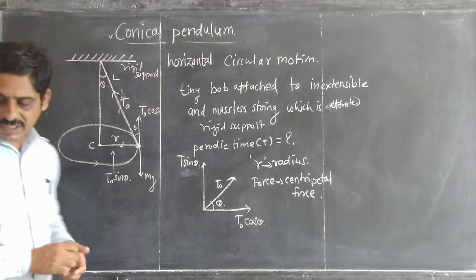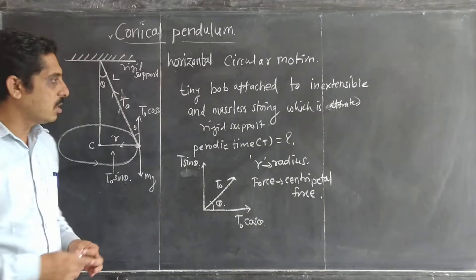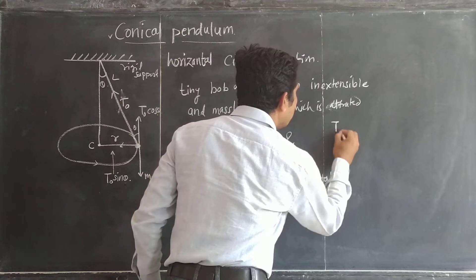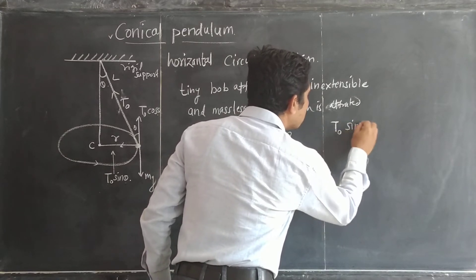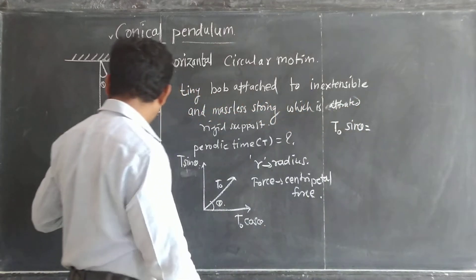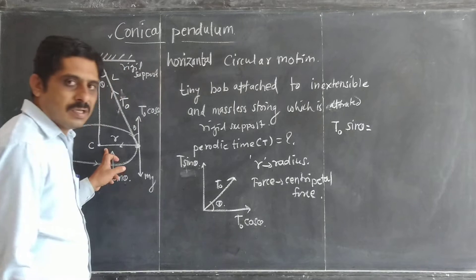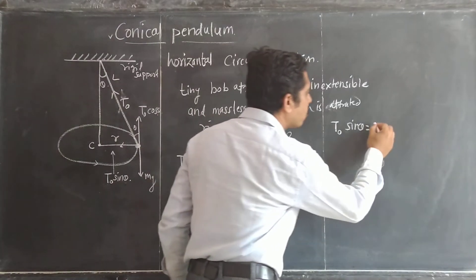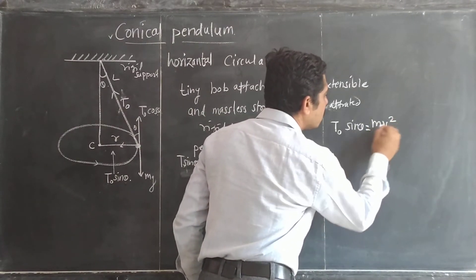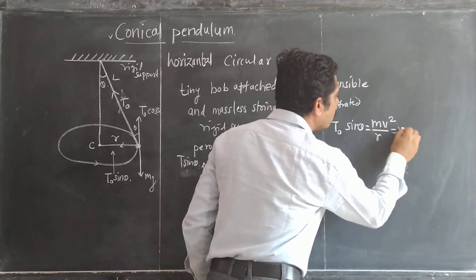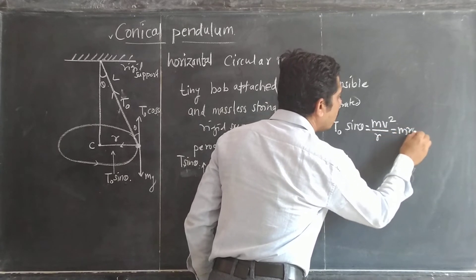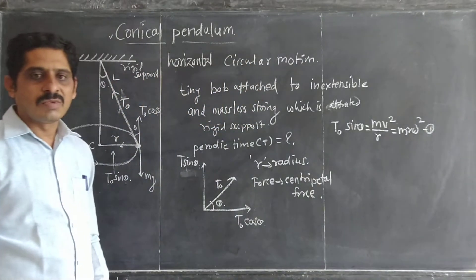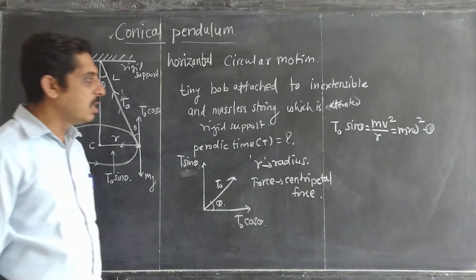We can write the first equation: T₀ sin theta must be equal to the centripetal force, which is mv²/r, equal to mr·omega². This is equation number one.